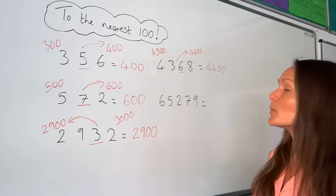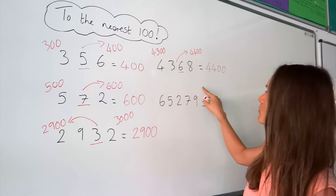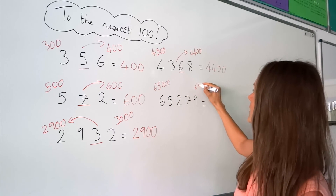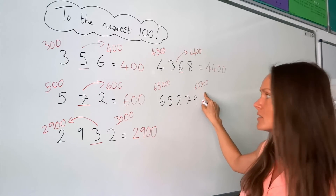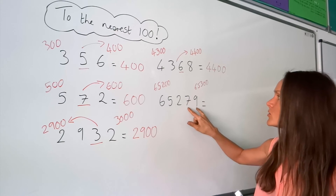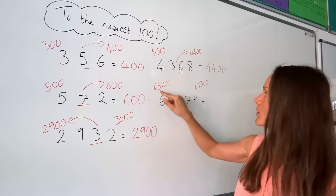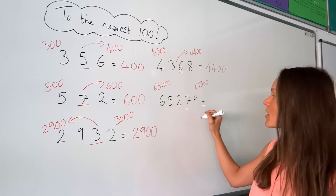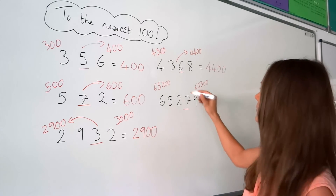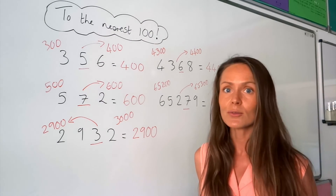The last one is an even bigger number, but it's exactly the same method. I'm going to write down the two multiples of 100 either side — I've got 65,200 and 65,300. Remember, if you don't know these multiples, just write the number out again with the last two digits replaced by zeros, then add 100 to find the bigger one. The second from last digit is larger than five, so we round up — the final answer is 65,300.